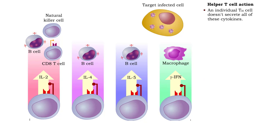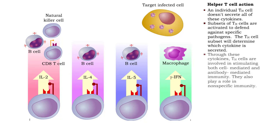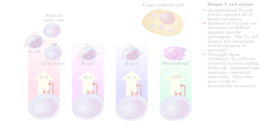In general, individual helper T cells do not secrete all cytokines. Subsets of helper T cells secrete different cytokines. The subset of helper T cell that is activated is determined by which defense is needed against a specific pathogen, and will also determine which cytokine is secreted.